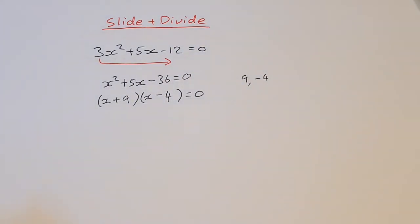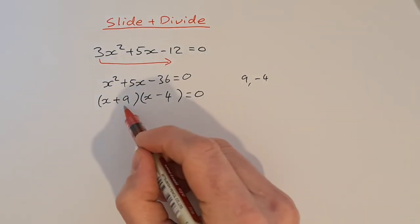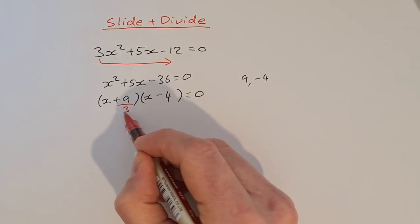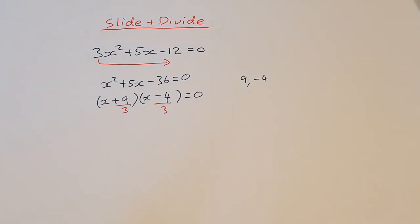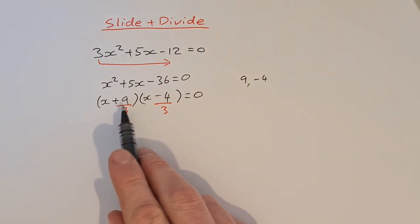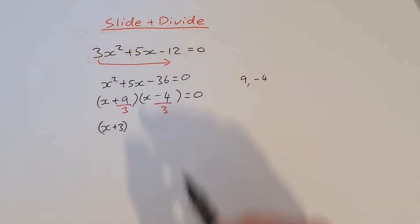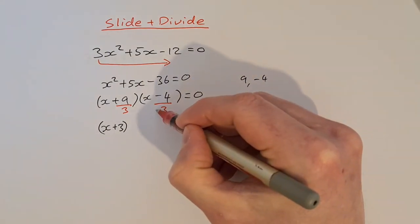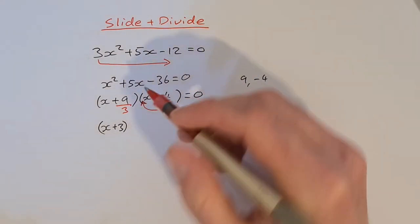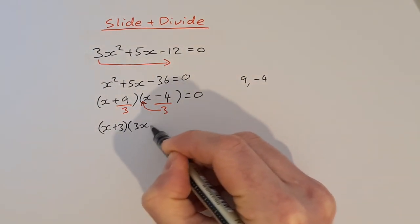Now you might say these don't look like the factors from last time — we haven't done the divide part yet. So we did the slide, now we do the divide. We divide 9 by 3 and we divide minus 4 by 3. For the first one, x plus 9 divided by 3 is 3, so that gives us x plus 3. For the second one, 3 doesn't go into 4, so we take this 3 and put it up in front of the x, giving us 3x minus 4.